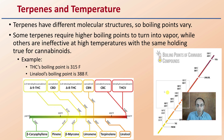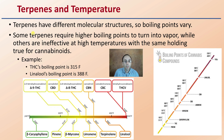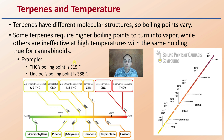Terpenes and temperature: terpenes have different molecular structures, so their boiling points will vary. Some terpenes require high boiling points to turn into vapor while others are ineffective at high temperatures, with the same holding true for cannabinoids. For example, THC's boiling point is 315 degrees Fahrenheit and linalool's boiling point is 388 degrees Fahrenheit. Pinene has a very low temperature relatively speaking, while THCV has a very high boiling point.